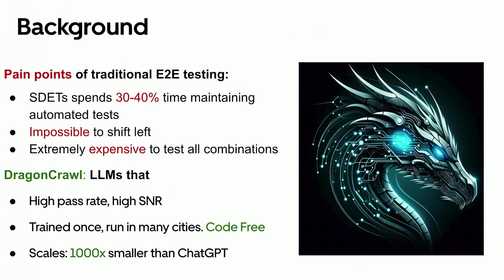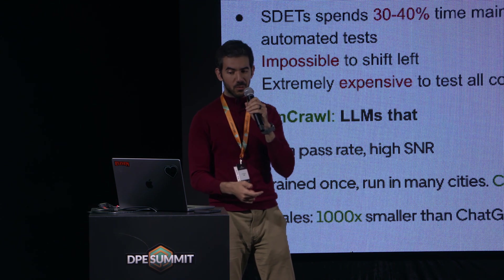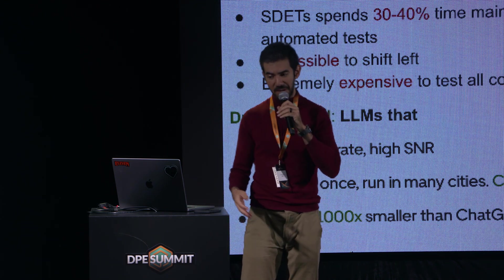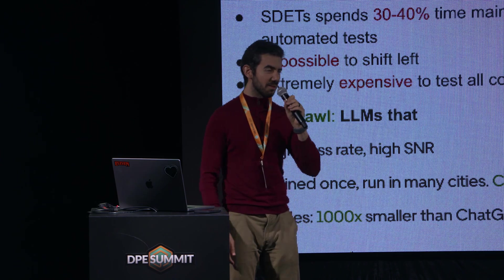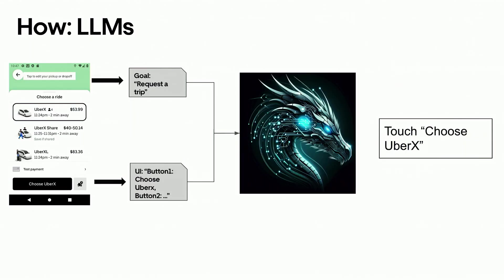It's also extremely expensive to author and maintain tests for all of that. So we built Dragon and Crawl to address those three pain points. We fine-tuned LLMs so they can get through minor flow and UI changes and execute with a very high pass rate — to the point where we can shift left. With Dragon and Crawl, you train once and it works in many cities, code-free and maintenance-free.